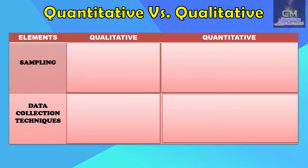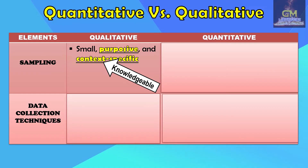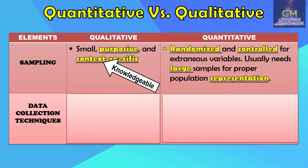In terms of sampling or the selection of participants, in qualitative research the sampling is small, purposive, and context-specific — meaning we look for those who are actually knowledgeable about the topic or problem in our research, so they can share relevant ideas and experiences. Whereas in quantitative research, it is randomized and controlled for extraneous variables, and usually needs large samples for proper population representation.